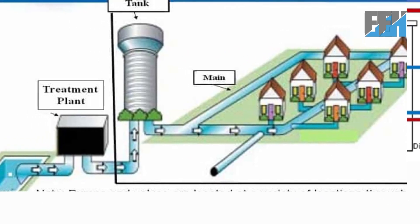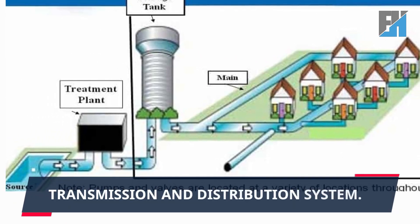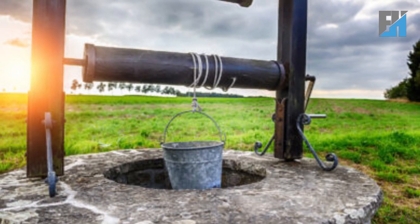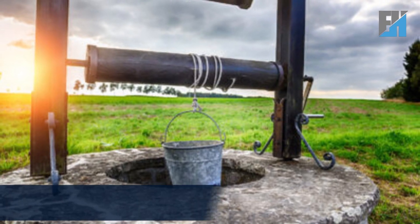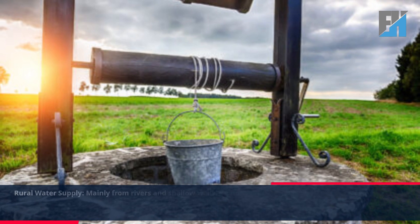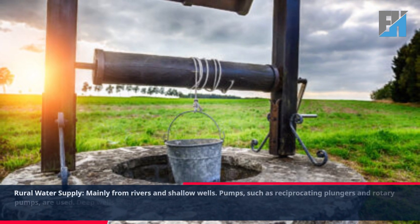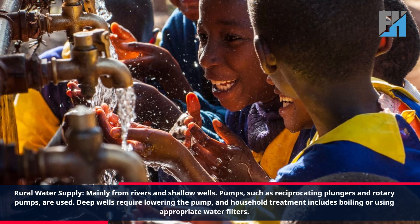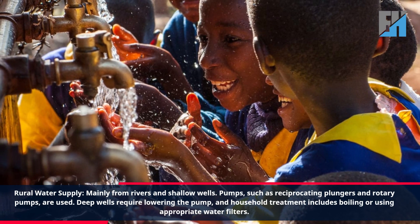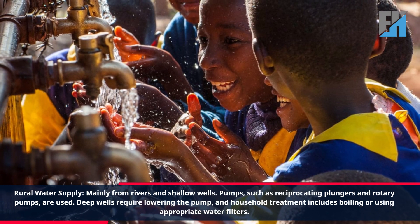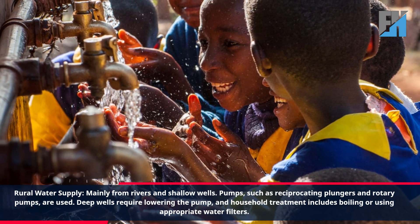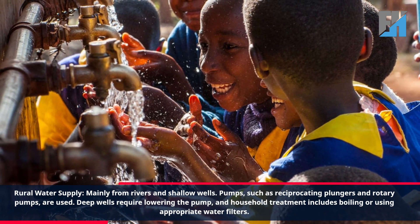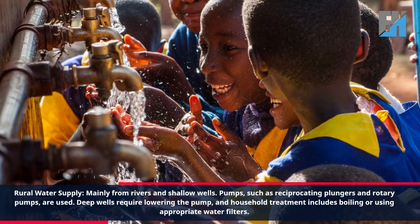For rural water supply, water mainly comes from rivers and shallow wells. Pumps such as reciprocating plunger pumps and rotary pumps are used. Deep wells require lowering the pump, and household treatment includes boiling or using appropriate water filters.